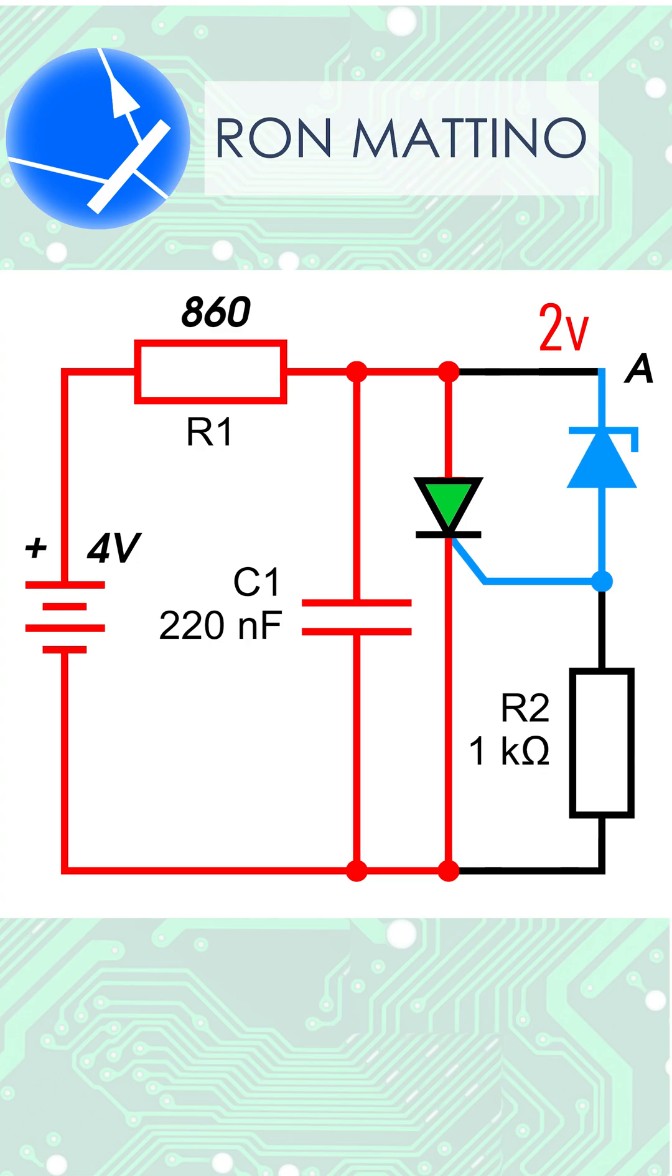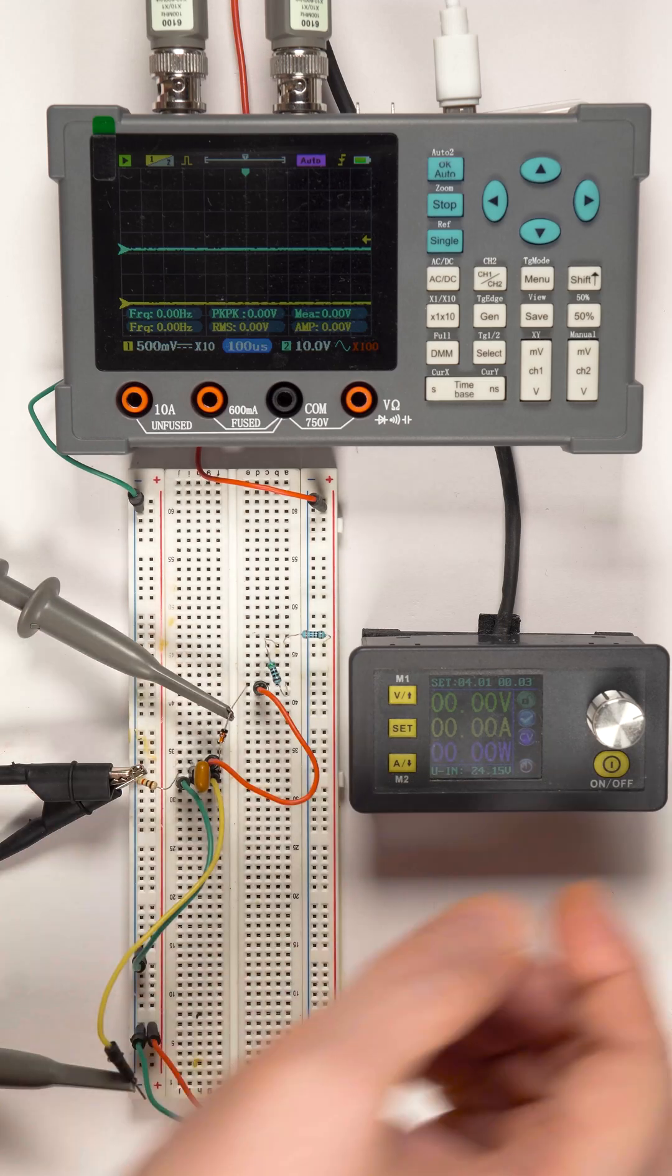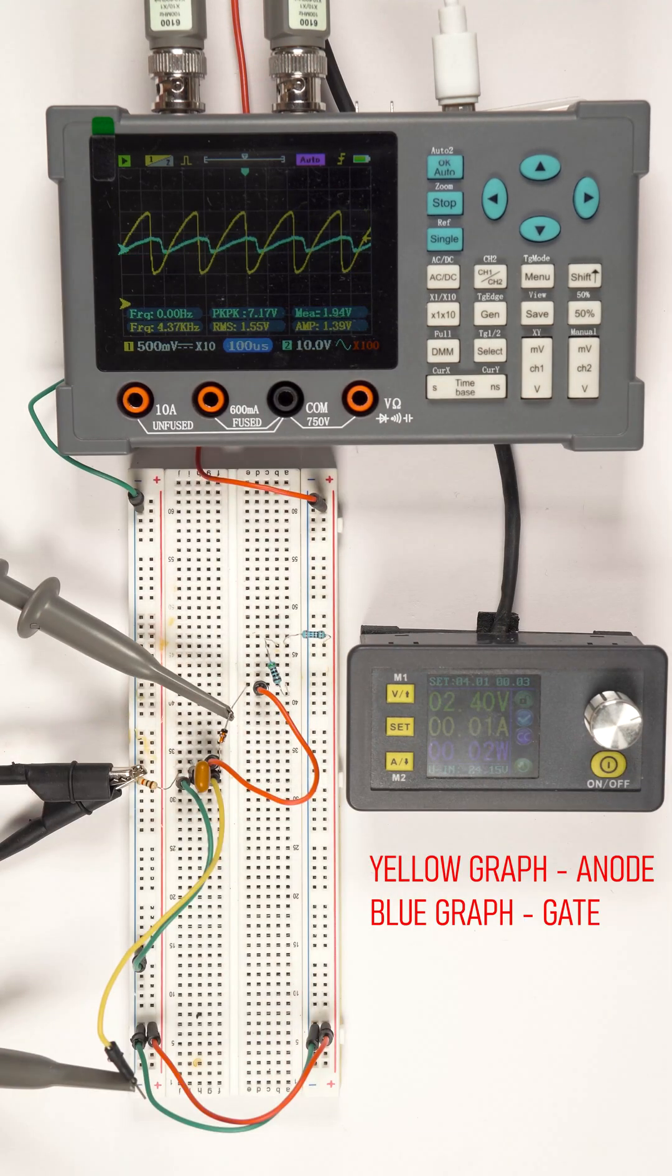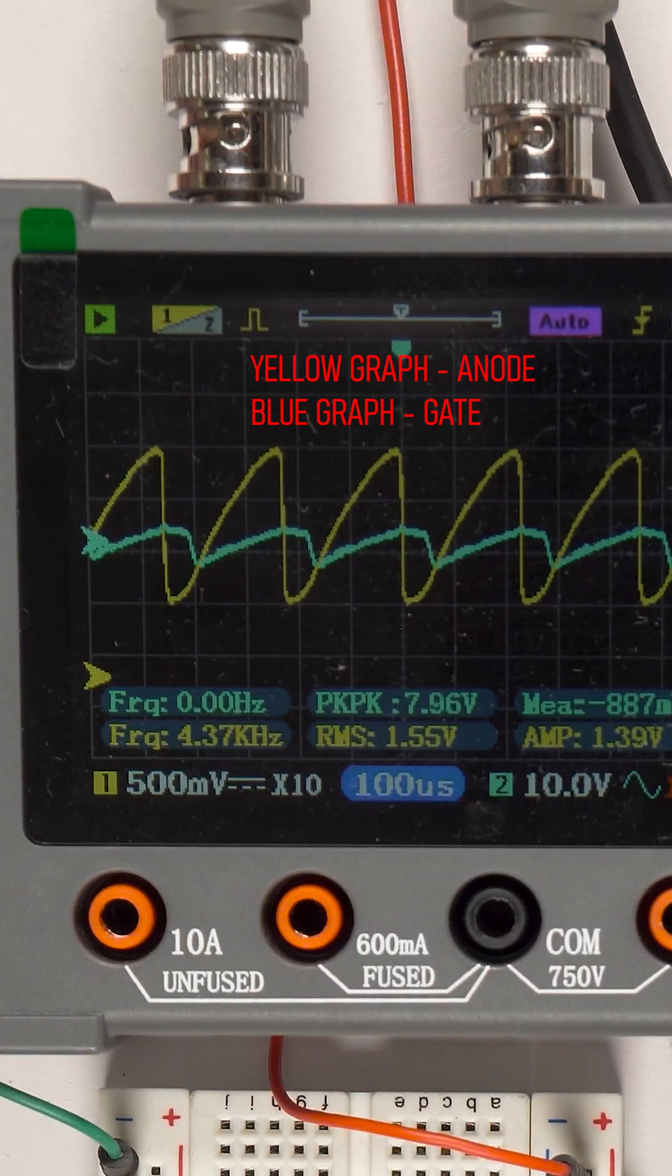However, the capacitor is quickly discharged and current falls below the thyristor's latching value. So the SCR shuts off, then the cap charges again and the cycle repeats. As we can see, the frequency of our oscillator is around 4kHz.